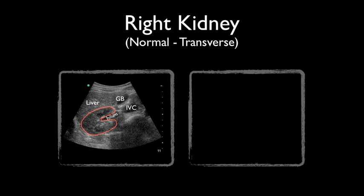The renal cortex and pyramids are found on the periphery of the kidney and appear grainy. The central area of the kidney, the renal sinus, will appear bright and consist of the calyces, renal pelvis, and renal sinus fat. It is a good idea to always scan both kidneys for comparison. Ureters are usually not well visualized with ultrasound, but when distended, may appear as tubular structures extending inferiorly from the kidney.